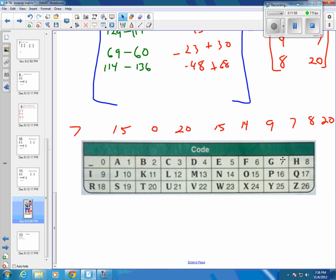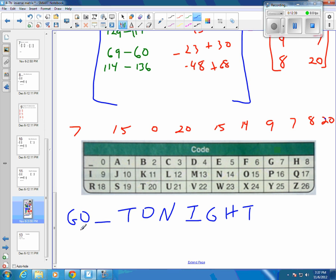So I can put this back. So 7 is G. 15 is O. 0 is a space. 20 is T. 15 is an O. 14 is an N. 9 is I. 7 is G. 8 is H. And 20 was T. And you get your message, go tonight, back out of there.